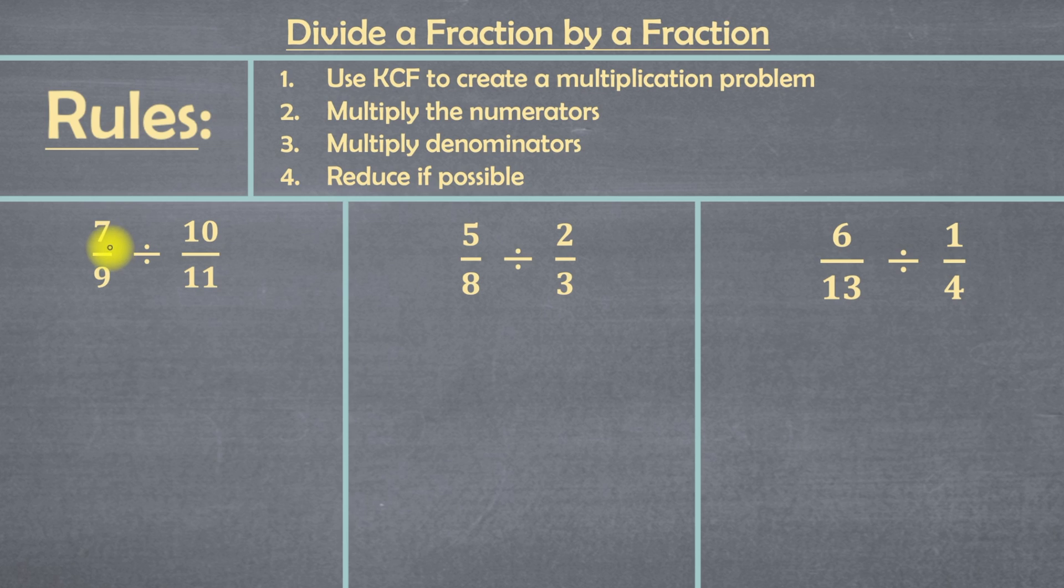So this first example says 7 over 9 divided by 10 over 11. The first rule or step is to use KCF to create a multiplication problem. In case you don't know, KCF stands for keep, change, flip. Where we keep the first fraction, we change our division to multiplication, and then flip our second fraction so the top becomes a bottom and the bottom becomes a top.